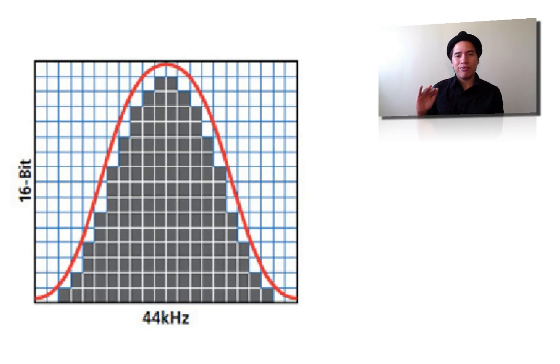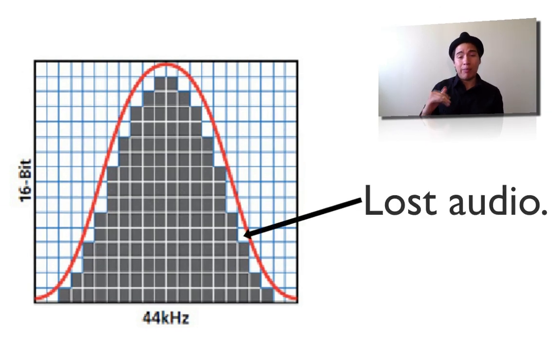So what I want you to do now is focus your attention on the white boxes in between the red curve and the black boxes. This space right here represents the audio lost at lower rates. This is a bad thing.